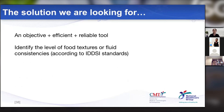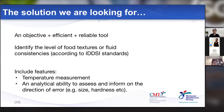The solution we are looking for is an objective, efficient, and reliable tool that can help identify the levels of food textures and fluid consistencies. Ideally, it will include features such as temperature measurement and the analytical ability to assess and indicate where the area of concern is — be it size, hardness, softness, or moisture level — so it can help anyone who uses the product to know how to troubleshoot and achieve the right consistency or texture that will be safe for a patient.